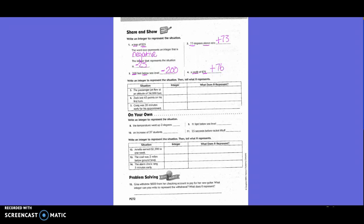Write an integer to represent the situation, then tell what zero represents. The passenger jet flew at an altitude of 34,000 feet. Is that positive or negative? Positive, because of altitude. We'd underline altitude and 34,000 feet because altitude goes up. What would zero mean in this case? If you're going above, what are you going above? Ground. What's ground also called in technological terms? Sea level.